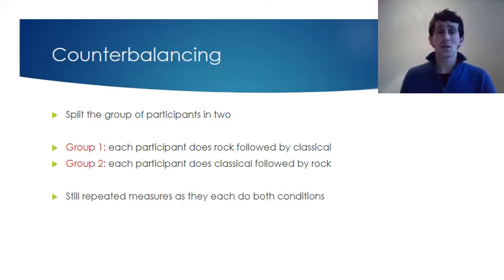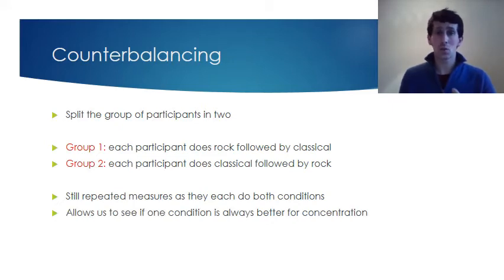And what this allows us to do is still do a repeated measures test, because everybody in there is still doing both of the conditions. And what it allows us to do is to see if one condition is always better than the other. So if this first group, group one, everybody does better on classical music, remember there's two reasons why this may have happened.